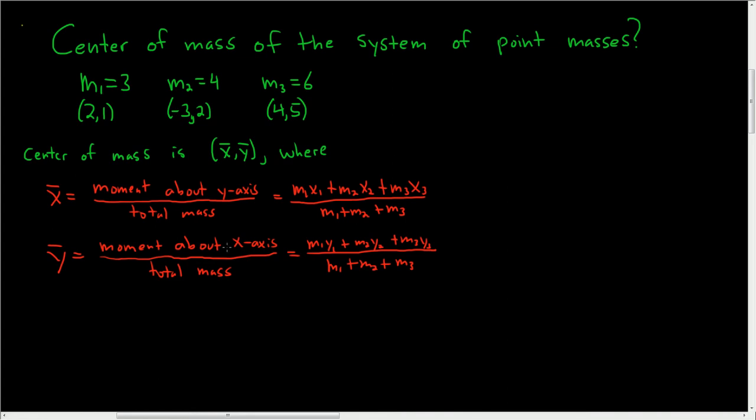So the center of mass is this ordered pair here, where the first component, the x-coordinate, is equal to the moment about the y-axis divided by the total mass. And the y-coordinate is the moment about the x-axis divided by the total mass. Let's go ahead and work it out. It's actually really easy. All you do is plug the numbers into the formula.